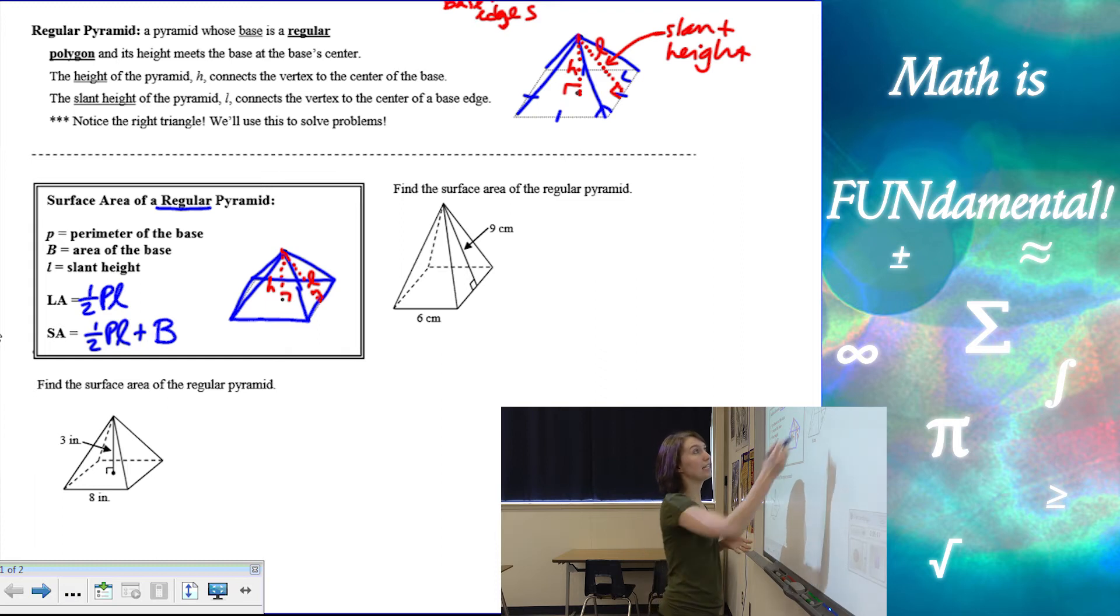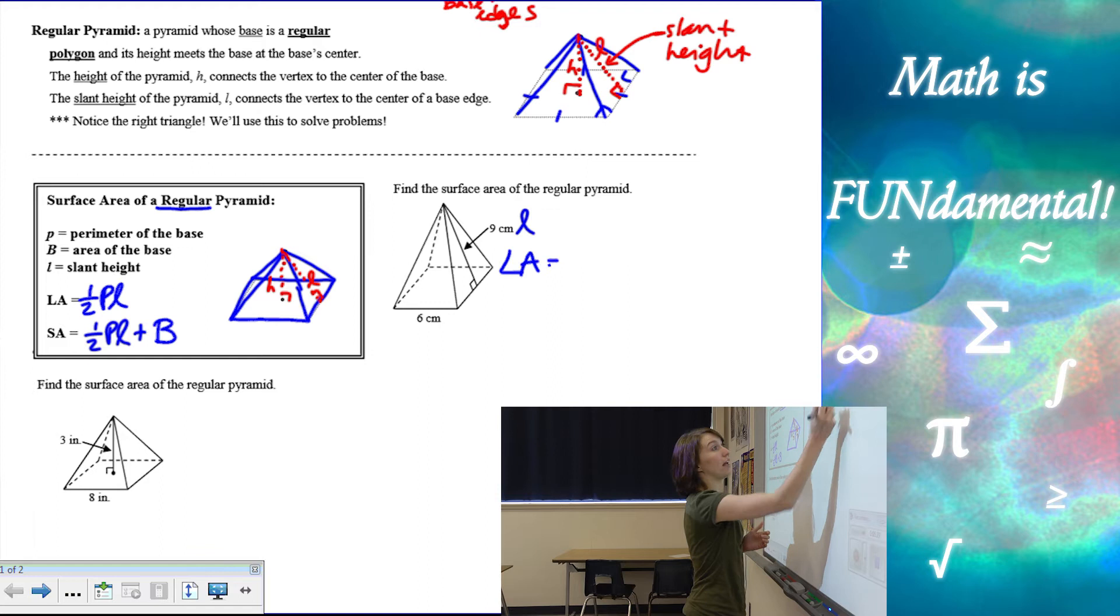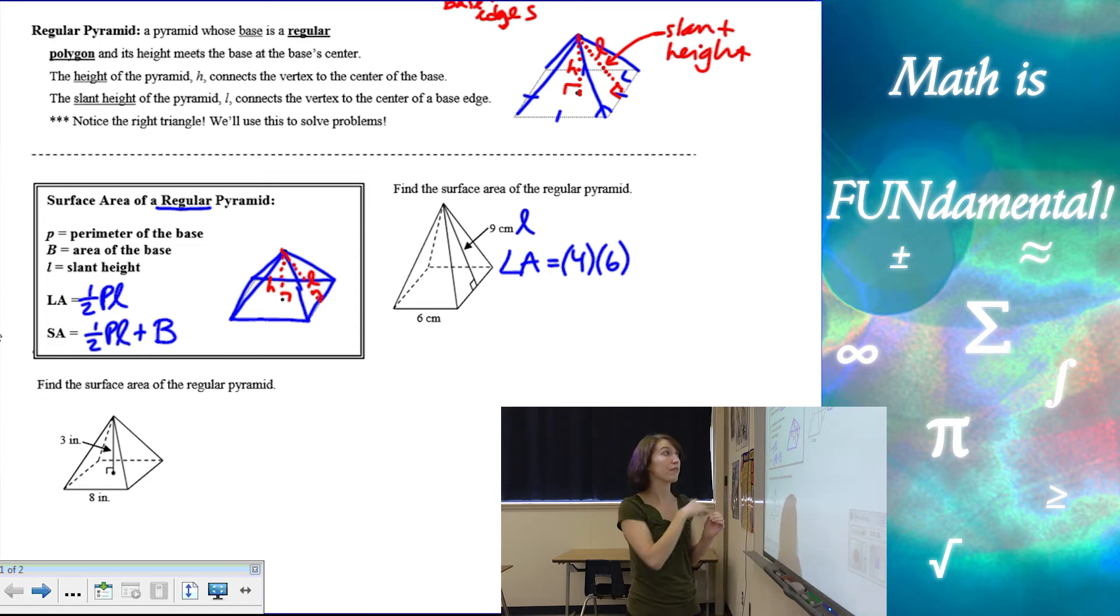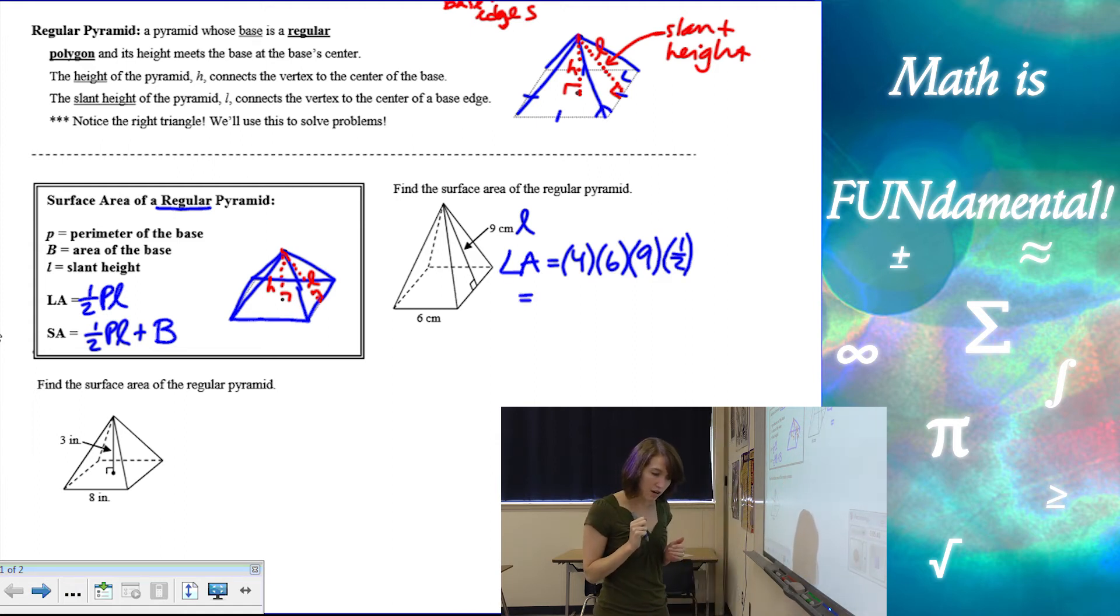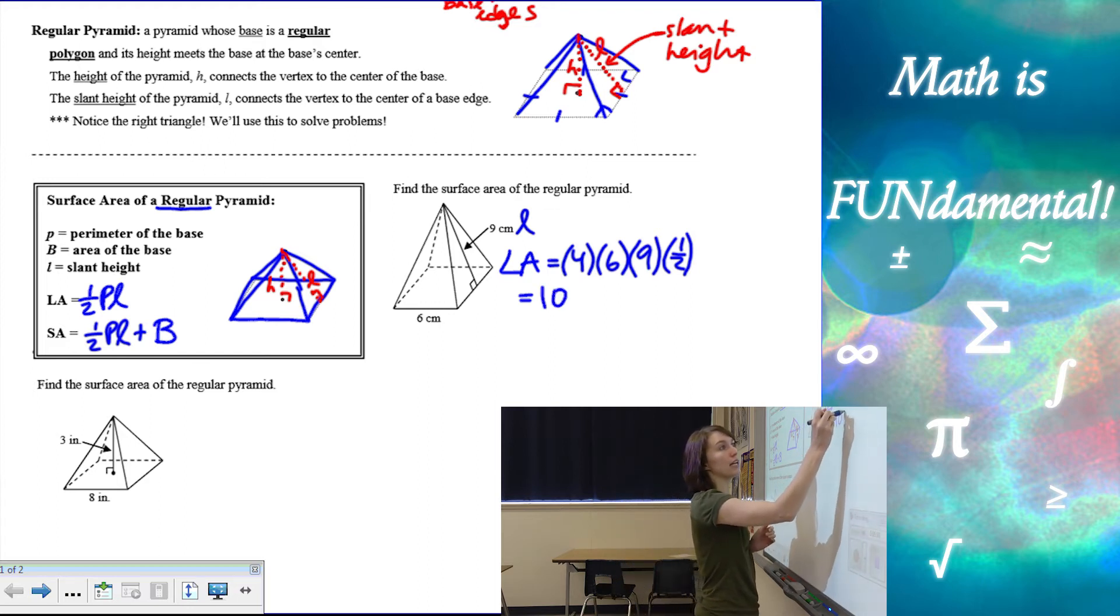So we have a slant height, remember, this is our L of nine centimeters. And we have a base length of six centimeters. So first, let's find our lateral area. Our lateral area is going to be four times six, because that's going to give us all of the perimeter of the base, times the slant height, which is the height of each one of those triangles, times one half. Because it is a triangle, area is one half base times height. If we multiply all of those together, our lateral area becomes 108 centimeters squared.